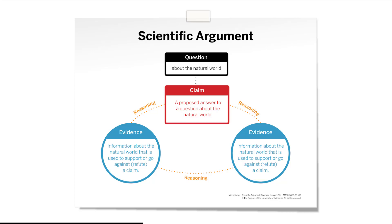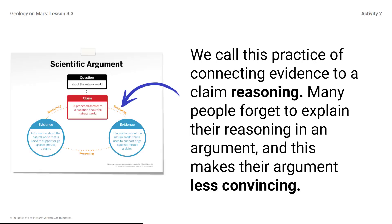A scientific argument involves more than just providing a claim and evidence. The goal of the argument is to be convincing by explaining your thinking so well that another person will understand and be convinced that your claim is accurate. This often means including important science ideas that would help someone understand how your evidence connects to your claim.